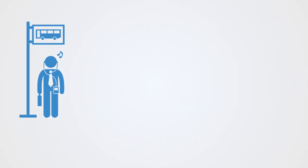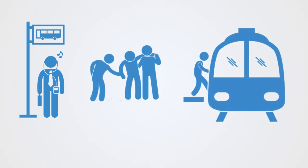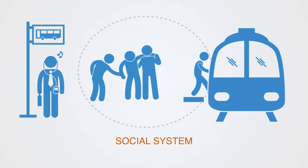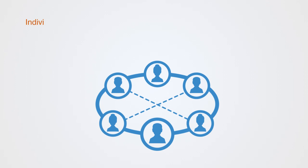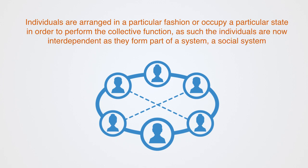But now imagine that when the bus arrives there is an elderly lady that needs help getting on the bus. So one person comes to hold the door open and two others give her support on each side. Now we have a social system because the individuals are interrelated and interdependent in affecting a joint outcome. All individuals are arranged in a particular fashion in order to perform a collective function, and as such the individuals are interdependent.